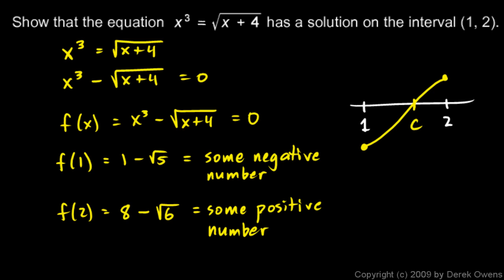To state this rigorously: x cubed is a polynomial, so it's continuous. The square root of x plus 4 is the composition of a root function and a linear function, both of which are continuous over their domain, so their composition is continuous. This overall f of x is then the sum of two continuous functions, which is continuous. Therefore the intermediate value theorem applies. Since f of 1 is negative and f of 2 is positive, zero lies between them, so there must be some x value between 1 and 2 where f of x equals zero — showing that this equation has a solution on this interval.